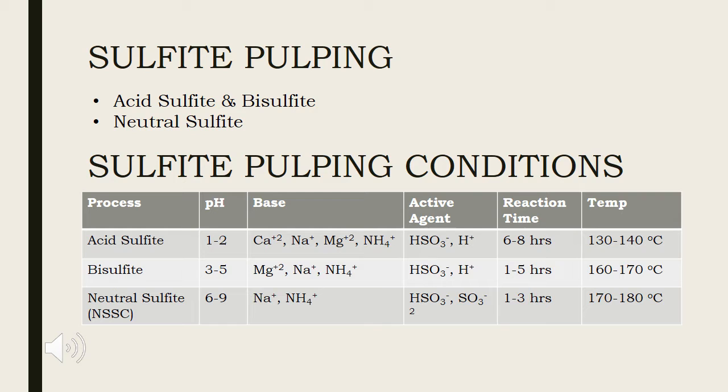Acid sulfite pulping requires long cooking time to prevent diffusion of sulfur dioxide ahead of base to avoid lignin condensation or black cook. It gives weak pulp with low hemicellulose. This reaction causes acid hydrolysis. It is mainly used for tissue paper manufacturing.